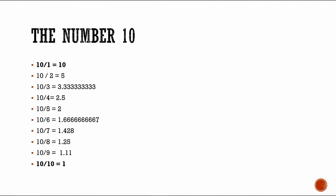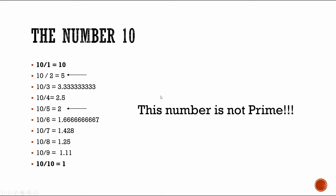Now let me show you the flip side. We have the number 10, which is divisible by one — 10 divided by one equals 10 — and it's divisible by itself, 10 divided by 10 equals one. But if you look through this list, you'll see that divisors two and five will give you a quotient that does not have a remainder. So this ultimately means that the number 10 is not a prime number, because 10 is not only divisible by one and itself.